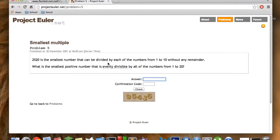This is the problem: 2,520 is the smallest number that can be divided by each of the numbers from 1 to 10 without any remainder. What is the smallest positive number that is evenly divisible by all the numbers from 1 to 20?